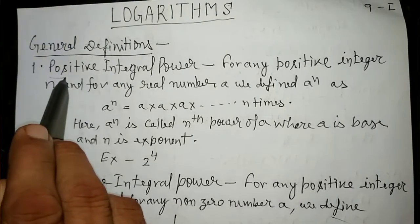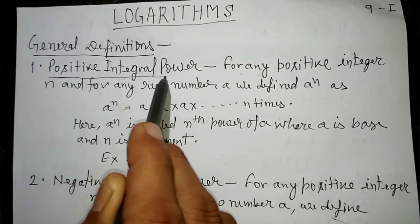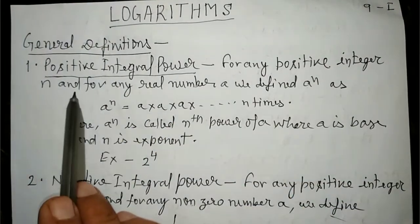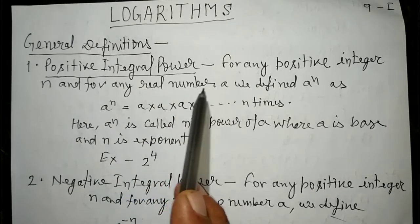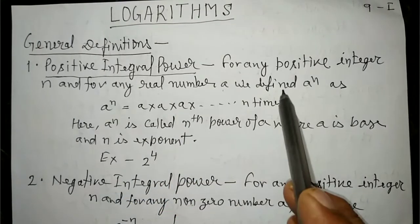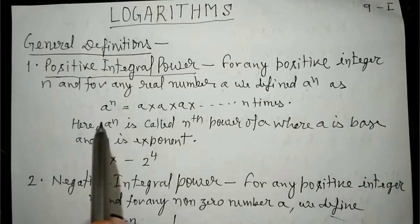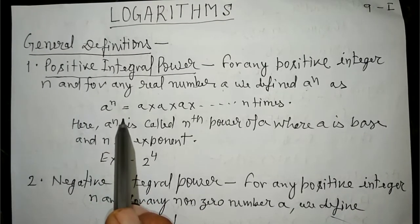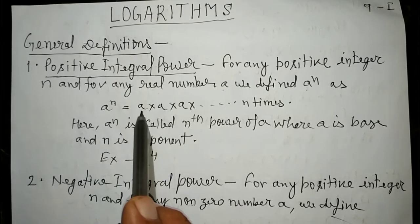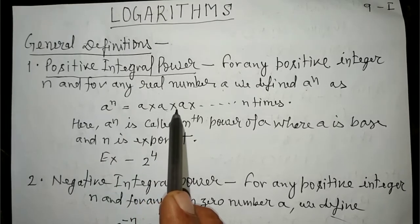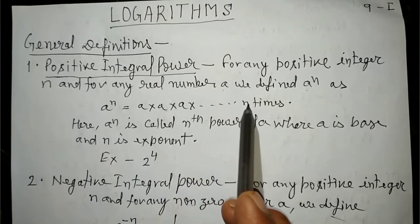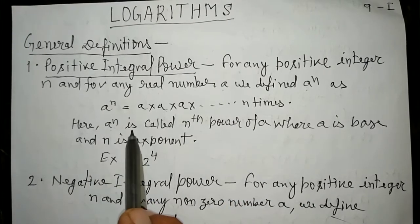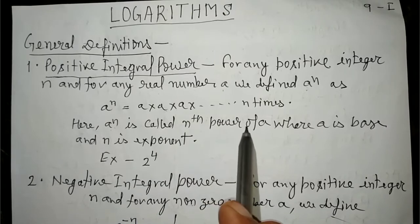Positive integral power: for any positive integer n and for any real number a, we define a to the power n. We can write it in expanded form as a into a into a, and so on, up to n times. Here, a to the power n is called the nth power of a.